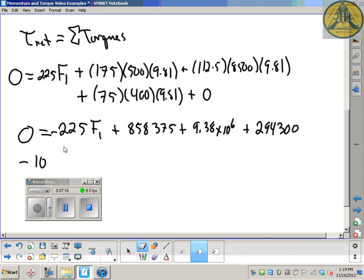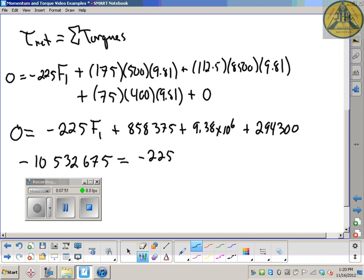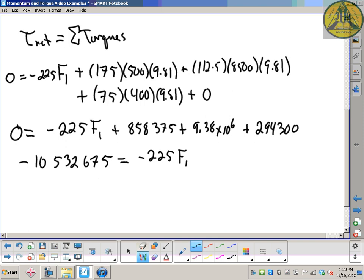The torque from F1 is a negative torque, which I put in my initial diagram and forgot here. Negative 225 F1 - that's going to make the whole problem work out to be a positive force. We should always get positive magnitude when we work out our torque problems for force. When you get up at four in the morning you miss stuff and your video gets too long.